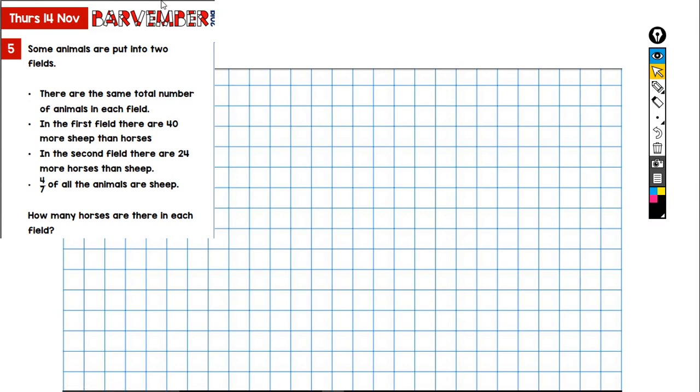But anyway, enough of that. I will start trying to draw this in a way that makes sense to me. Okay, so what have we got going on here? We've got animals split into two fields. So I'm going to do something for field one and I'm going to do something for field two. I'm going to draw a block for horses and for sheep.